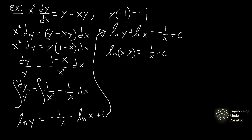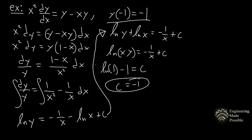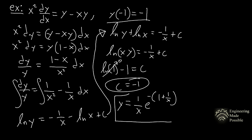Plugging in the initial condition: ln|(-1)(-1)| equals ln(1) equals 0, so 0 minus 1 equals C, giving C = −1. Substituting back and solving for y gives the explicit solution to this differential equation. These examples demonstrate separable equations, the simplest method for solving certain differential equations.